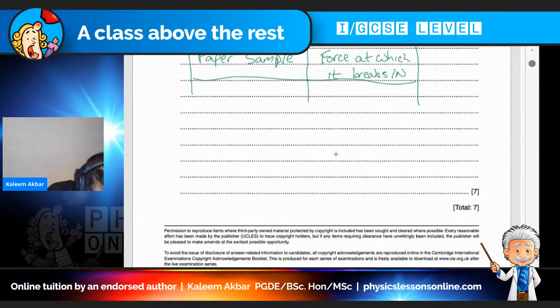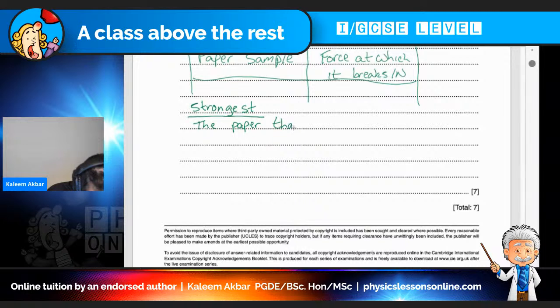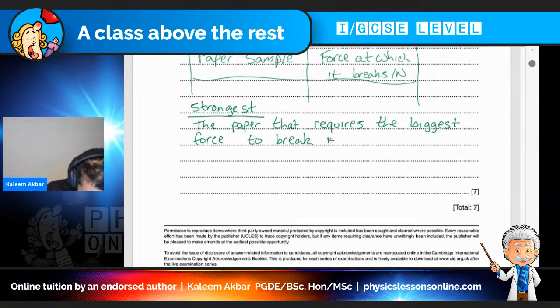And then the next bullet point. So look, again, I'm following it through. Apparatus we did. Instructions we did. What we will measure. We've just done it. How will we present our results? We've just done that as well. And then it says how you will determine which paper is the strongest. So the strongest. Notice I've got these little subheadings. Because the paper that requires the biggest force to break is the strongest.